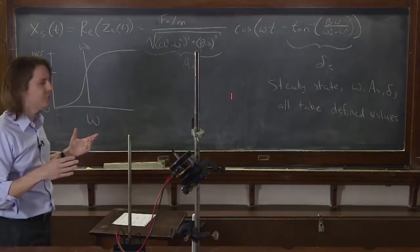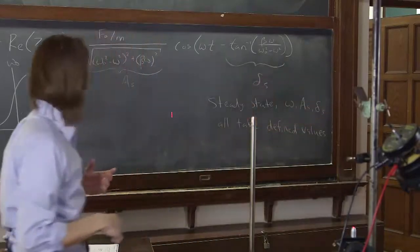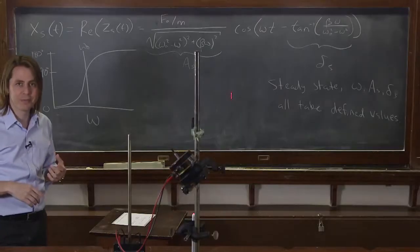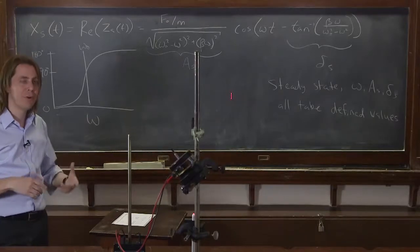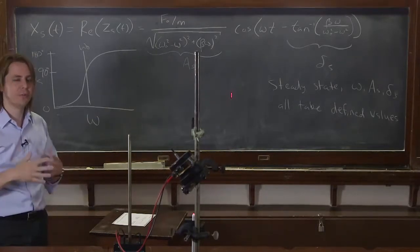And then even once it reaches the steady state, if I mess with it and give it a new set of initial conditions, it's got to go through the transient again. So it's the transient solution that has the free parameters that go with the initial conditions. And that's what we'll figure out next.